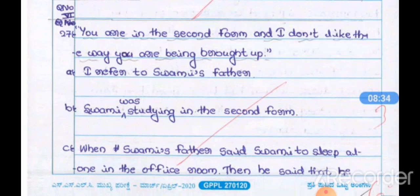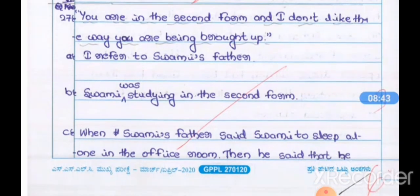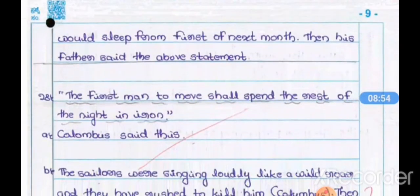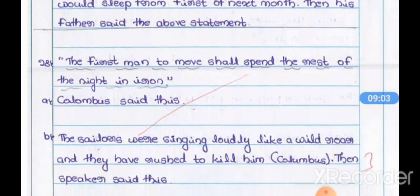Question number six is extracts. Remember, students — when you write the extracts, completely write the sentence first. Afterwards, write A, B, and C answers. The answers are neat and well-presented.